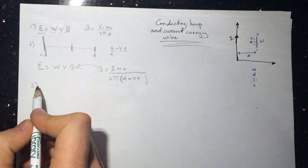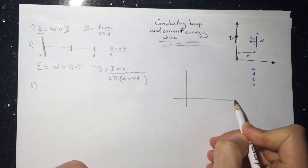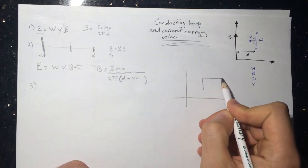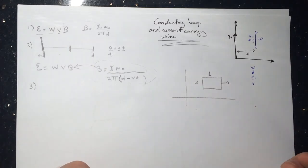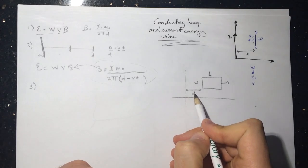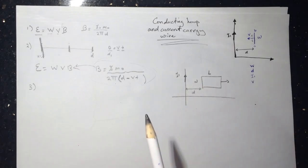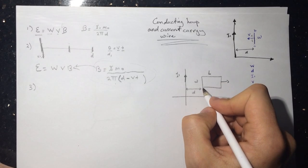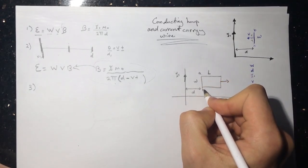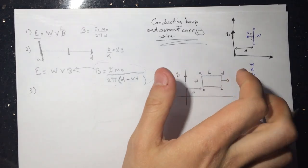Question three introduces a different scenario: now we have a loop with dimensions W and L moving to the right, at distance d from the same current I₁. They want to find the induced current in this loop, which I'll label with corners A, B, C, D.